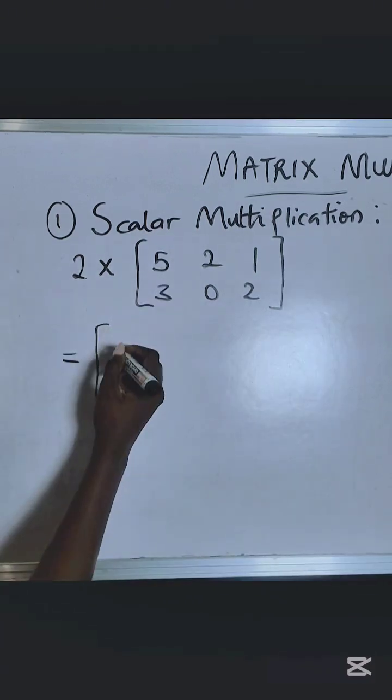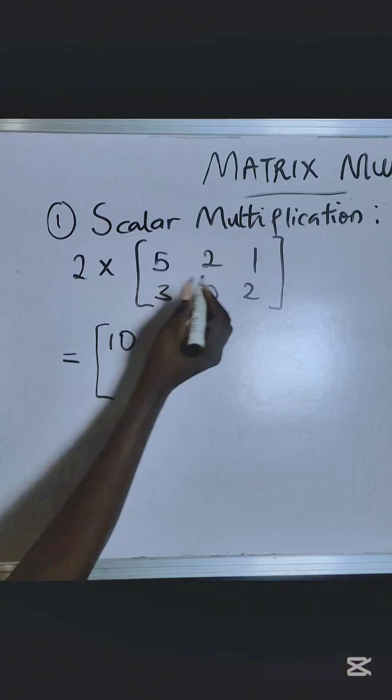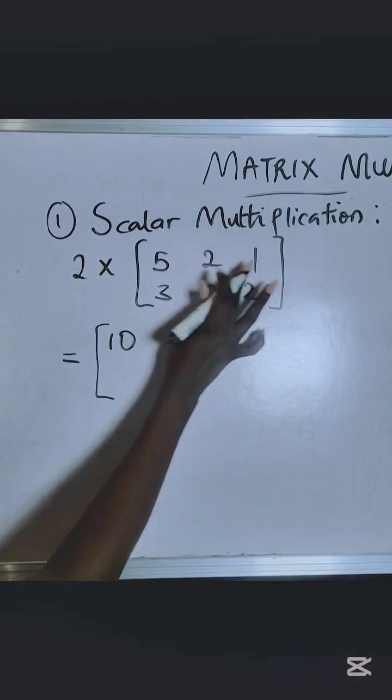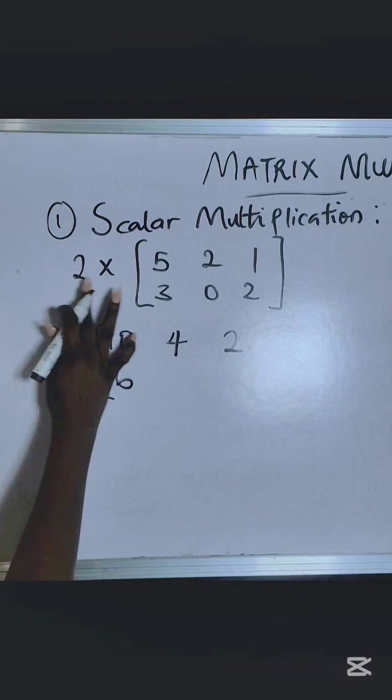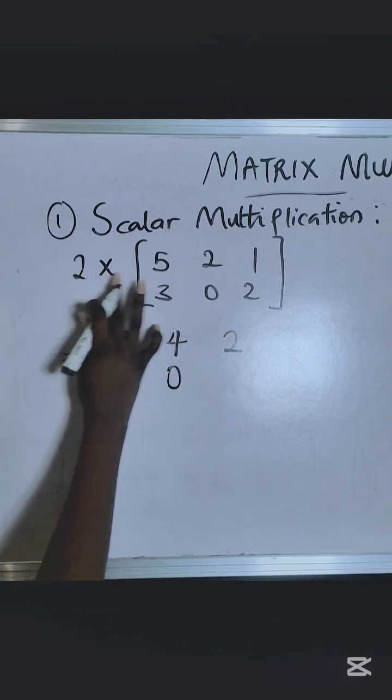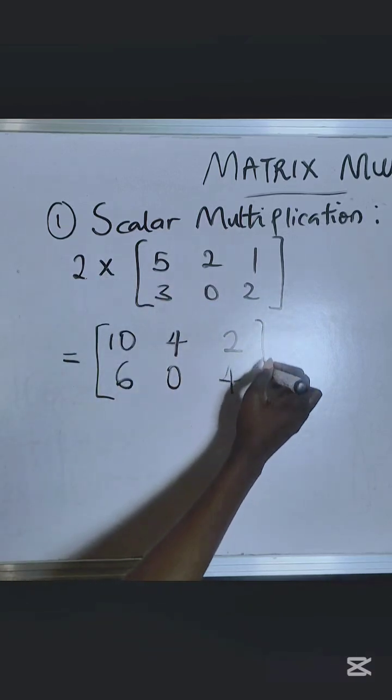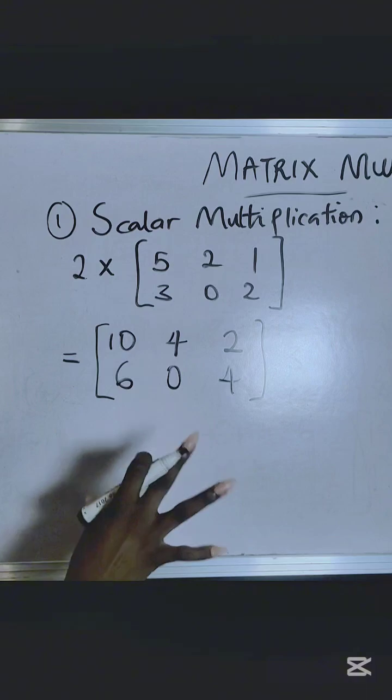So in this case, 2 times 5 is 10, 2 times 2 is 4, 2 times 1 is 2, 2 times 3 is 6, 2 times 0 is 0, 2 times 2 is 4. All you have to do is just put them in the same position as they were.